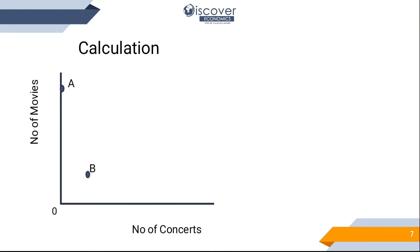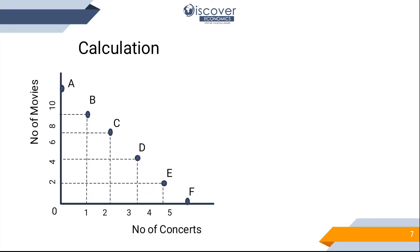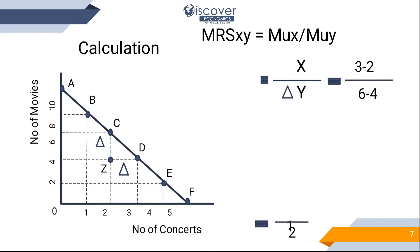Let's see how to calculate MRS. We have all the bundle points and the budget line. Moving from point C to point D, we first drop from C to Z. The difference is 6 minus 4, which equals 2 — so we are giving up 2 movies. The price of a movie is $10, so 2 movies saves $20. That $20 can be used to buy one concert, since the price of a concert is $20. This is why you get this trade-off.